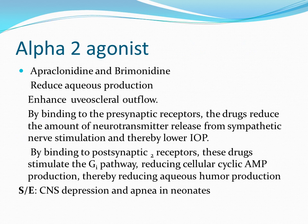Apraclonidine and brimonidine are the alpha-2 agonists used in the management of glaucoma. Apraclonidine is a polar clonidine congener which does not cross the blood-brain barrier; it is applied topically at 0.5 to 1% strength and lowers intraocular tension by 25% by decreasing aqueous production via alpha-2 receptor activation. Brimonidine is a more recently introduced clonidine congener that is more alpha-2 selective and more lipophilic than apraclonidine. It lowers intraocular tension by 20 to 27% by reducing aqueous production and increasing uveoscleral outflow.